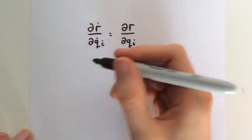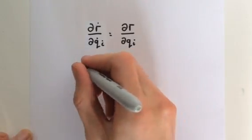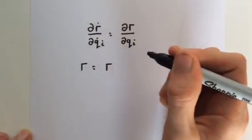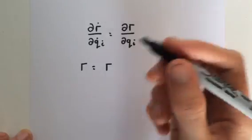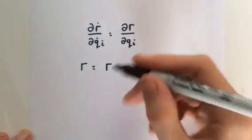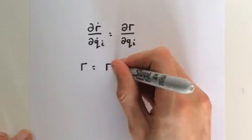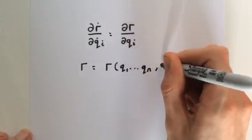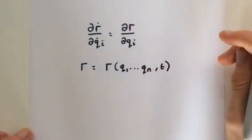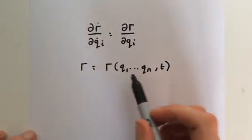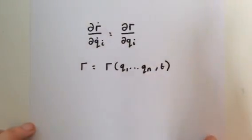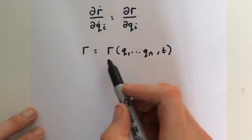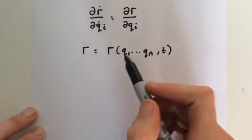First, let's set up the transformation equations for r, where r is our position. For a holonomic dynamical system with n degrees of freedom — like we did in deriving Lagrange's equations of motion — we get the transformation equations of q1 through qn, and then time. n is of course the number of degrees of freedom we have.